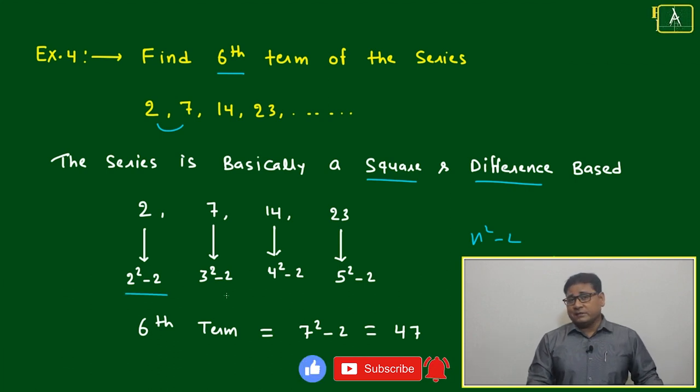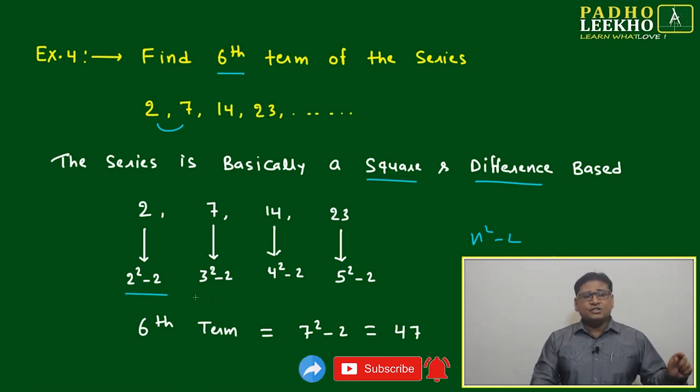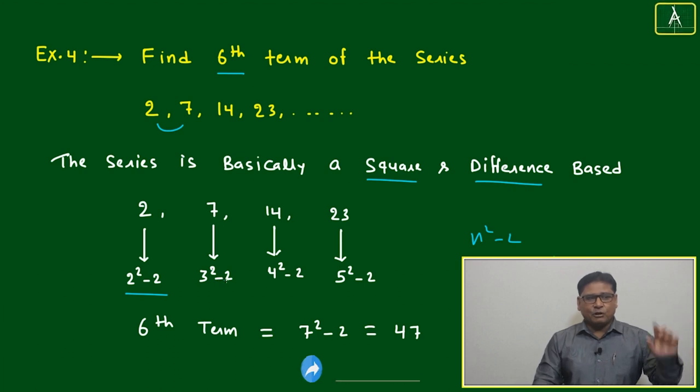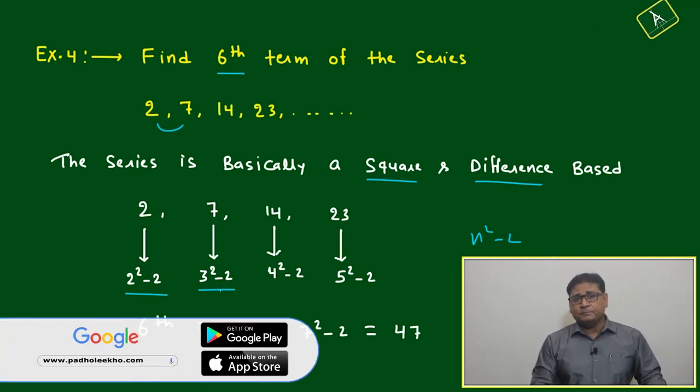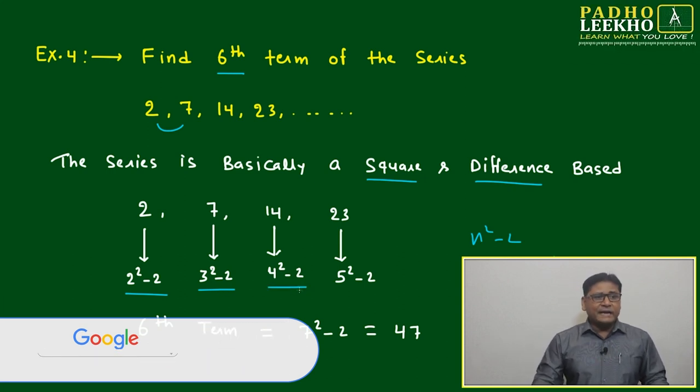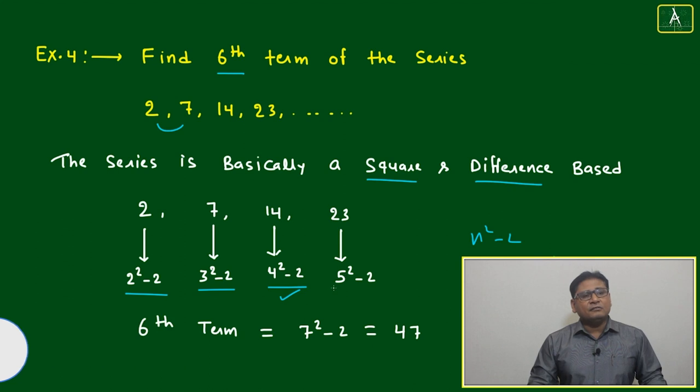Next term is 7. 3² - 2, it is okay, it is following. 14 is 4² - 2, perfectly right. Then 23 is 5² - 2.